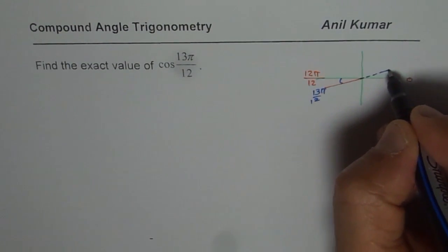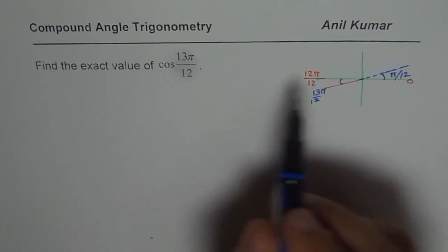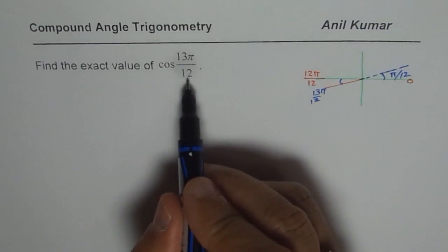Now, if I extend this, then the vertically opposite angle is also π/12. Is that okay? And therefore, I can write this in terms of cos of π/12.